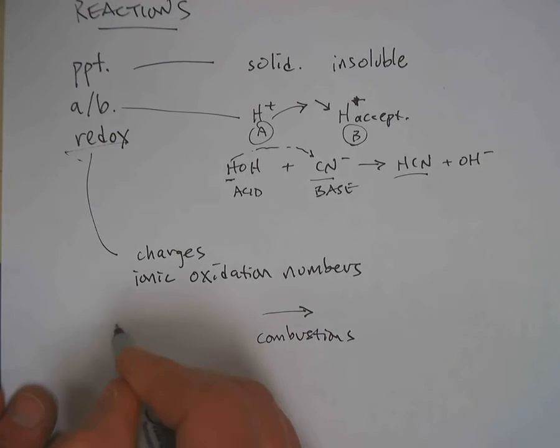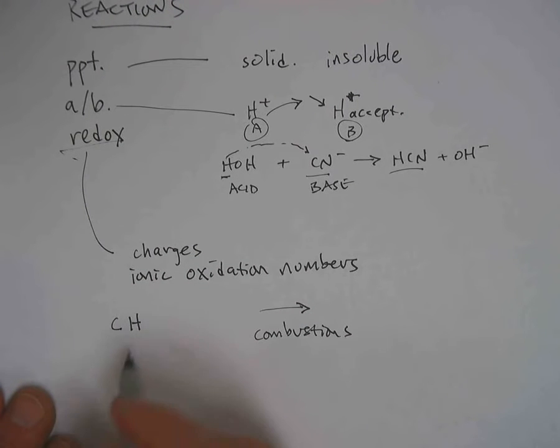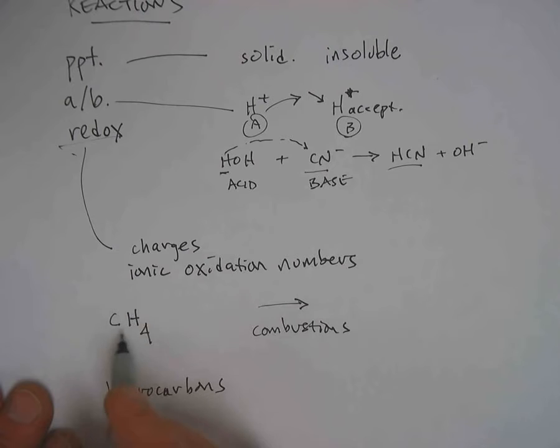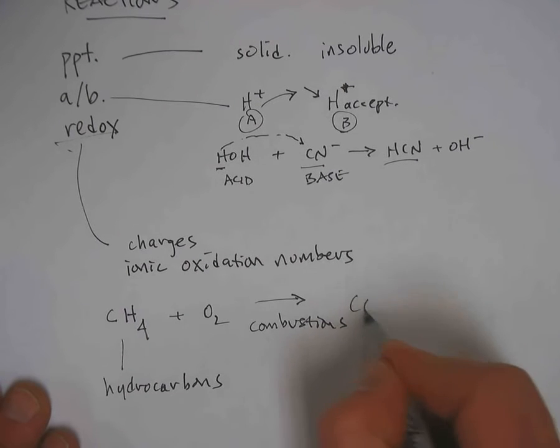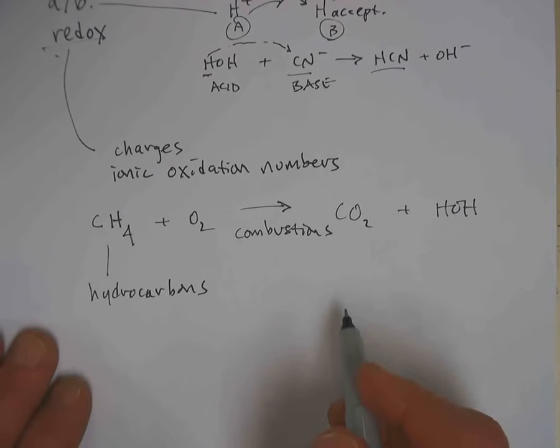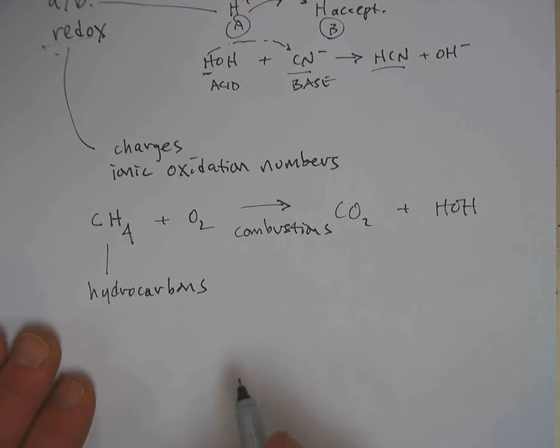One classification of area that fits into redox reaction are combustion reactions. Combustion reactions usually involve carbon and hydrogen containing things known as hydrocarbons. They're called hydrocarbons because they contain carbon and hydrogens. Here's an example called methane. When they react with oxygen they form carbon dioxide and water.